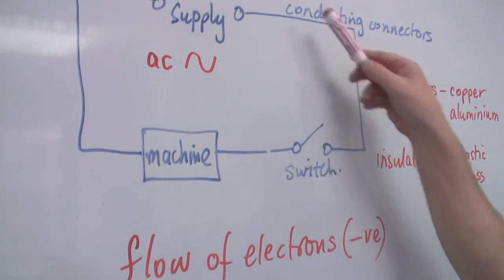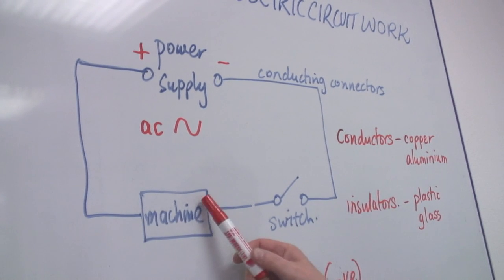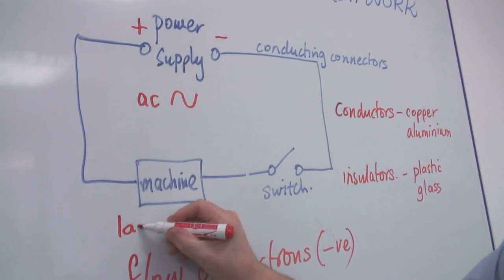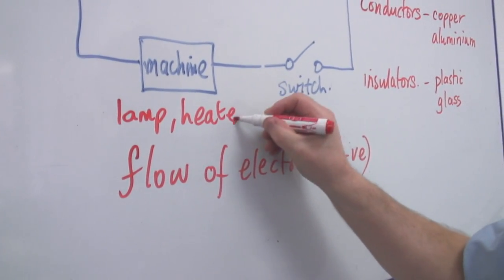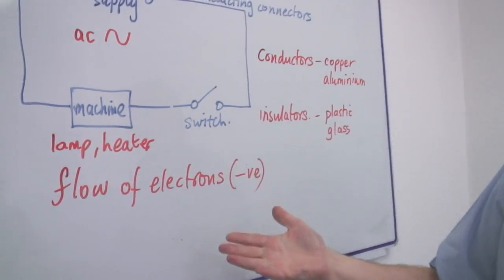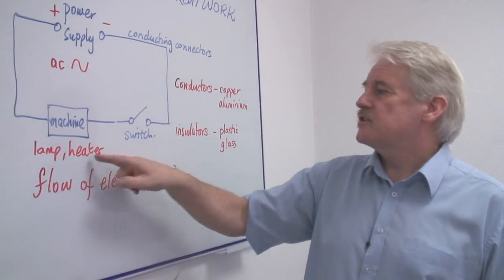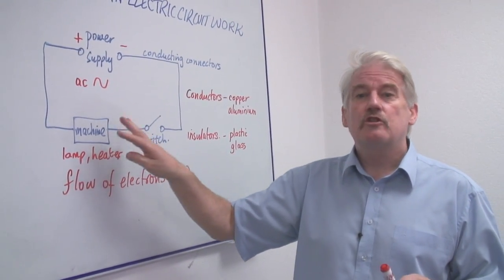So here we've got basically the components in an electrical circuit. You have a machine. The machine could be a lamp. It could be a heater. It could be a lot of things. It could be your radio. It could be your television. It could be anything of these. Your computer. But lamps and heaters. These are types of machine. A machine is just a thing that uses energy.